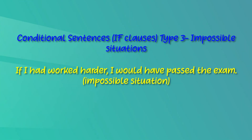So children, type 3 conditional sentences refer to an impossible condition in the past and its probable result in the past. These sentences are truly hypothetical and unreal because it is now too late for the condition or its result to exist. There is always some implication of regret with type 3 conditional sentences. The time is the past and the situation is hypothetical.